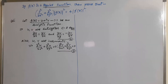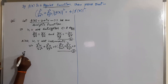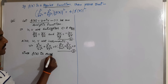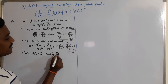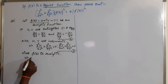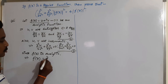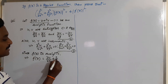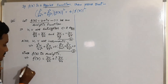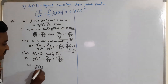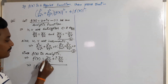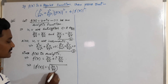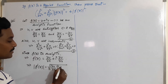Since f(z) is analytic, its derivative exists finitely. We already know that f'(z) = ∂u/∂x + i·∂v/∂x. So, what is its modulus? The modulus of f'(z) equals the square root of the real part squared, which is (∂u/∂x)², plus the imaginary part squared, which is (∂v/∂x)².